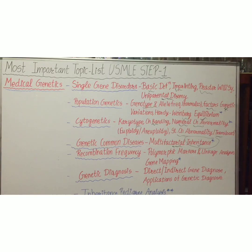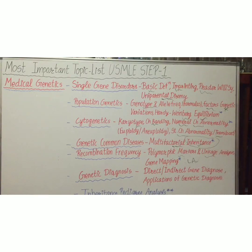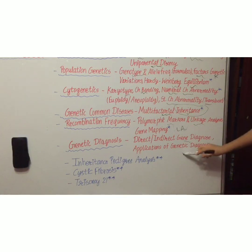The next topic is recombination frequency. Subtopics are polymorphic markers, linkage analysis, and gene mapping — with linkage analysis of gene mapping being a very important subtopic. The next topic is genetic diagnosis, with subtopics covering direct and indirect gene diagnosis and applications of genetic diagnosis.